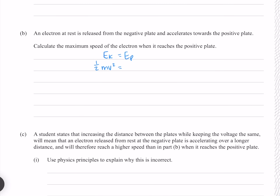Electric potential energy is given by eqd. From the formula sheet, the mass of the electron is 9.11 × 10⁻³¹ kg. We want to find velocity, and we just found our electric field strength. The charge of the electron is −1.6 × 10⁻¹⁹ coulombs, and we know the distance between the plates. So we just need to solve for velocity.